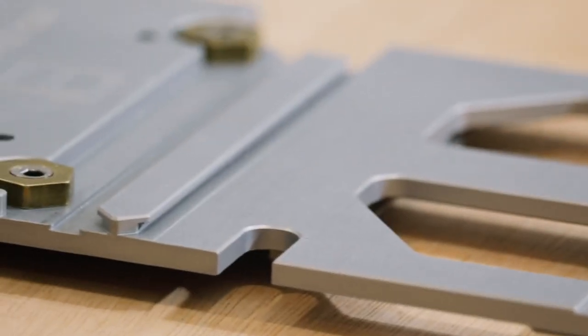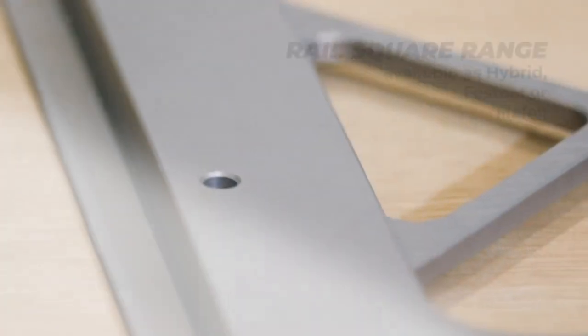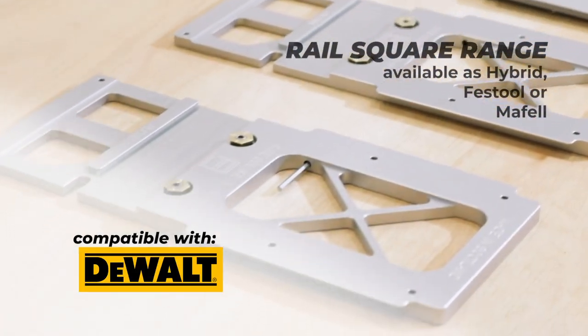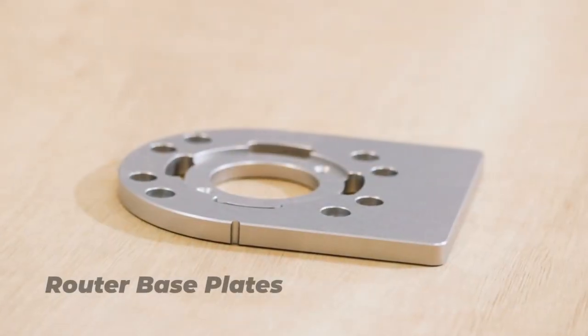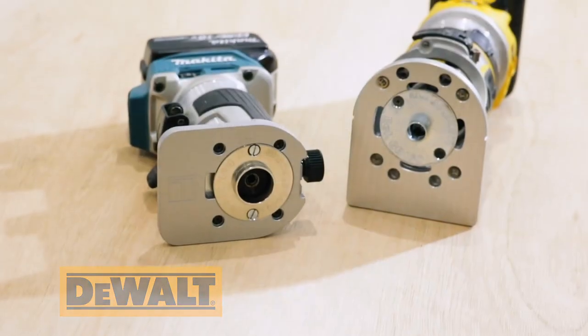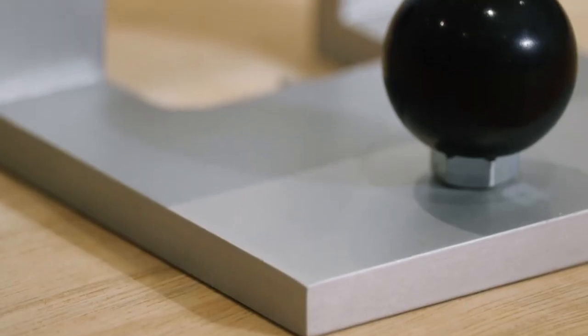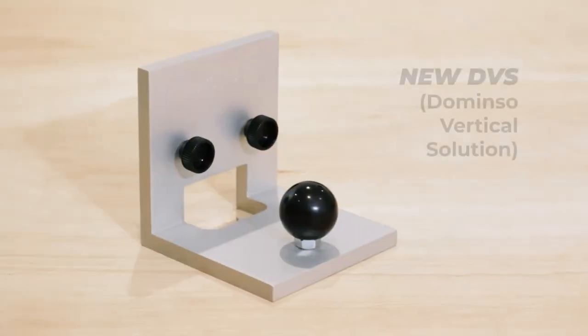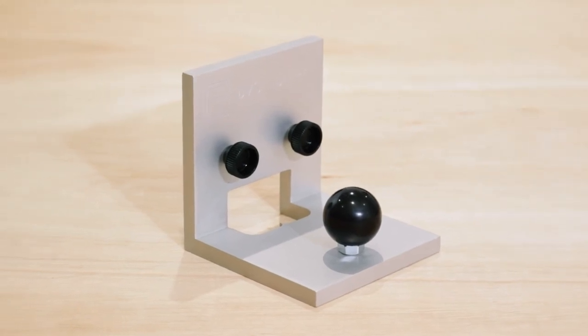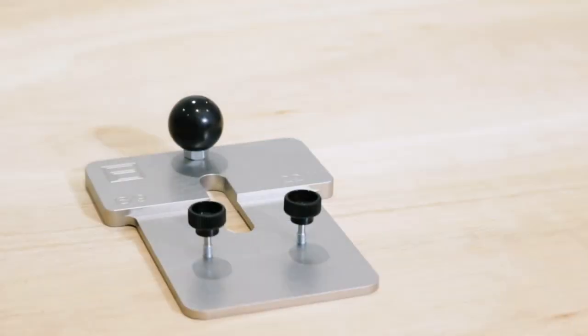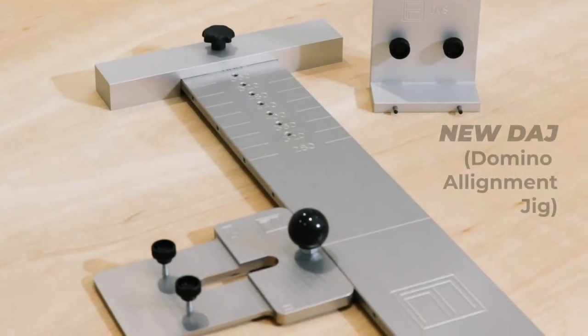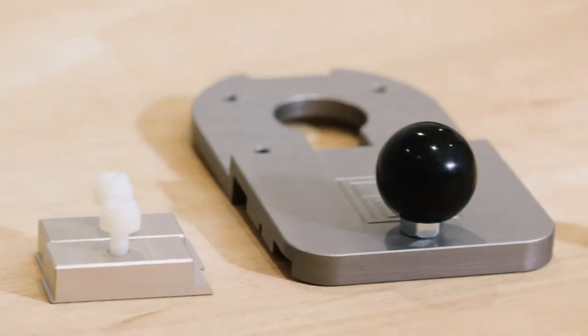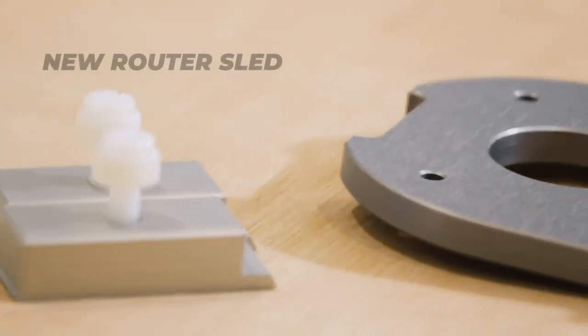Presenting the all-new FC product range, featuring the new RealSquare range, router base plates for Makita and Dewalt, the new Domino Vertical Solution, DCS plate, the all-new Domino Alignment Jig, and the brand-new Router Sled.